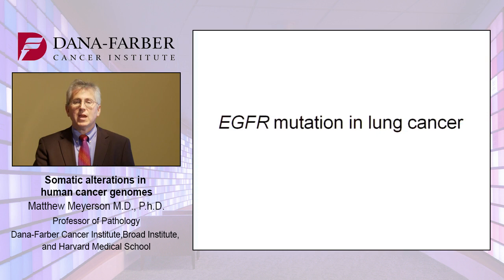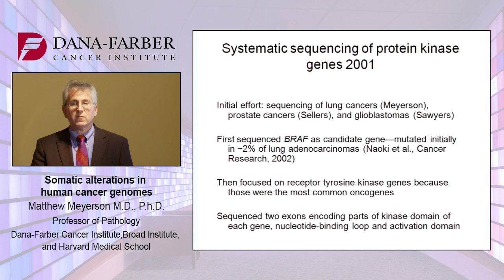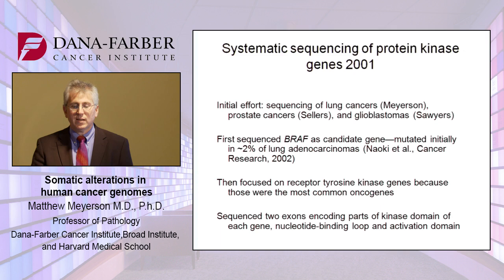I'd like to begin with a discussion of EGFR mutations in lung cancer, one of the most important targetable mutations in this cancer. Our work in this field goes back to 2001, when my colleague Bill Sellers and I began the systematic sequencing of protein kinase genes — beginning with lung cancers, prostate cancers, and glioblastomas. The first gene that we picked was BRAF as a candidate gene, which was mutated in about 2% of lung adenocarcinomas, work of Katsuhiko Naoki and colleagues published in Cancer Research in 2002.